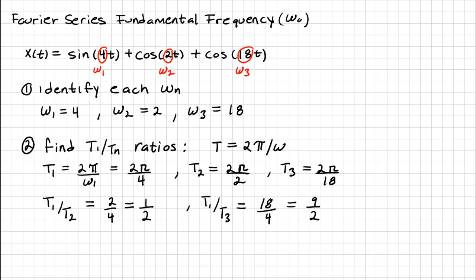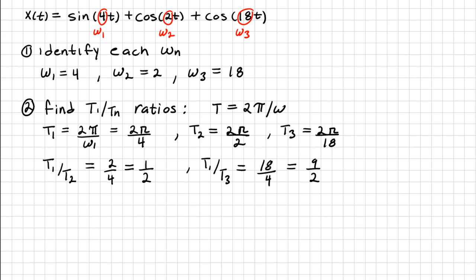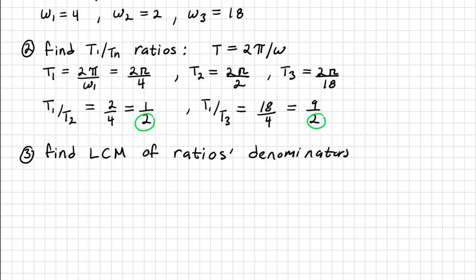So once we have found each of the combinations, we can use the resultant ratios to find a constant that will help us find the fundamental frequency. The next step is to take the denominators of each of my ratios and find the least common multiple of both. Finding the least common multiple is really easy. All you have to do is list the times table of each of the numbers.